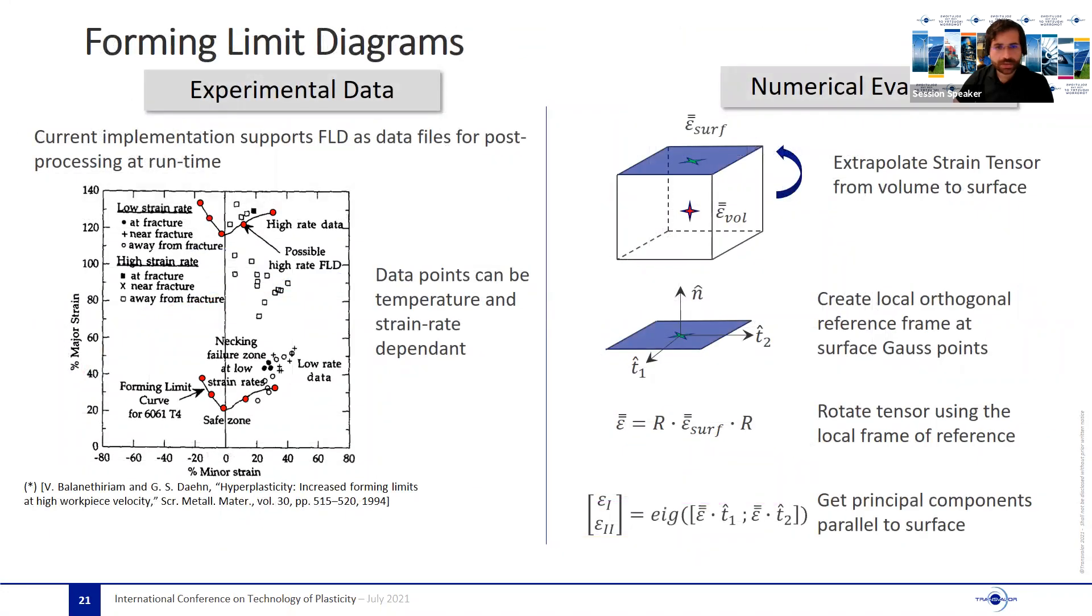Since magnetic pulse forming is usually used for thin metal parts, forming limit diagrams are a very useful tool for assessing quality of the final product, which is done by analyzing the surface strain state. Having the change in formability limits in mind, I implemented in FORGE the capacity of introducing FLDs which are temperature and strain rate dependent.